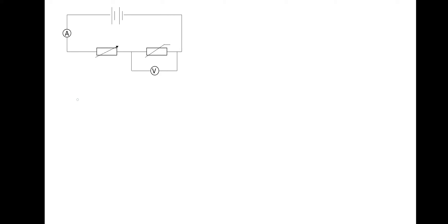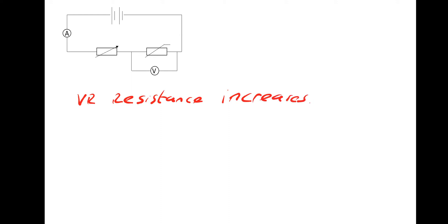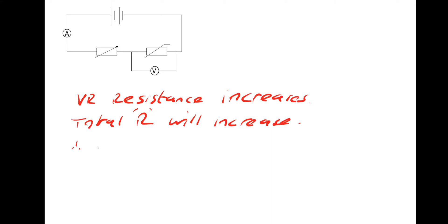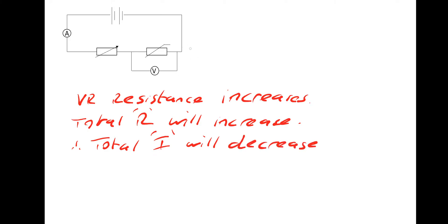To put this into words: variable resistor resistance increases, therefore total resistance increases, therefore total current decreases. Then if we look at V equals IR for the thermistor — its resistance is constant but its current has decreased, so its voltage share would also decrease.